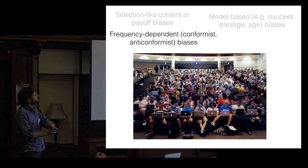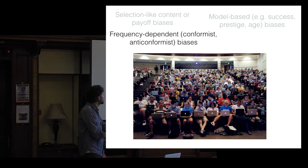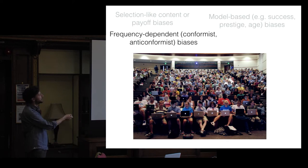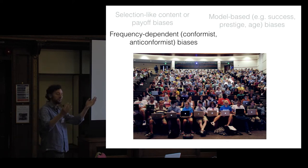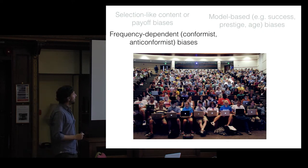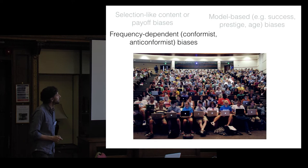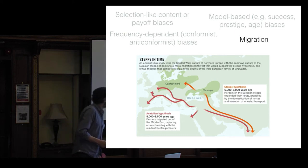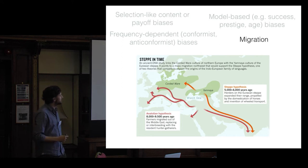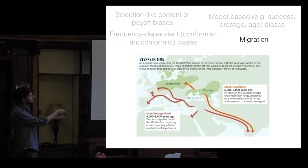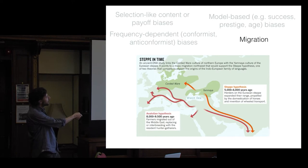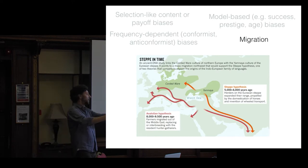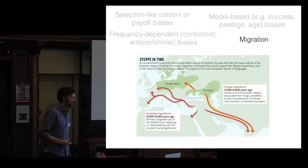We also have frequency-dependent biases, the most common of which is conformity, but you can also have anti-conformist bias. If everybody's using Macs, a good rule of thumb is to buy a Mac as well, irrespective of how good Macs or PCs are — you just use the frequency of behaviour in a population as a guide for what traits to adopt. We also have migration, particularly relevant to archaeology, where migrants bring new cultural knowledge into a population, such as the introduction of agriculture from the Middle East into Europe, or horse riding from the steppe.